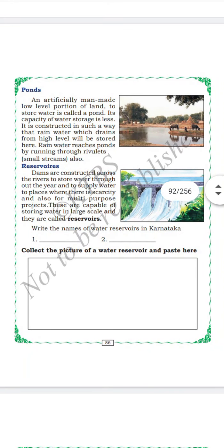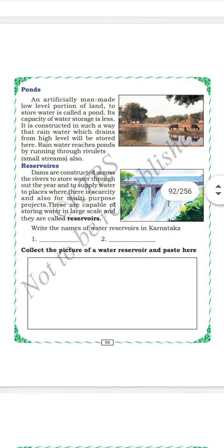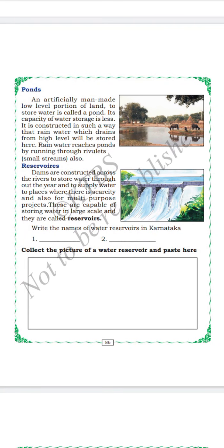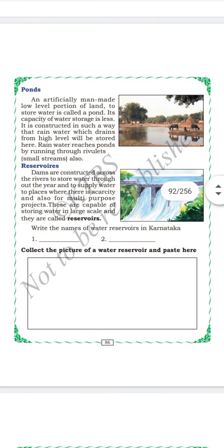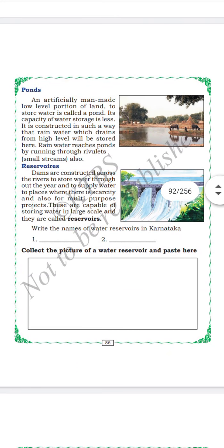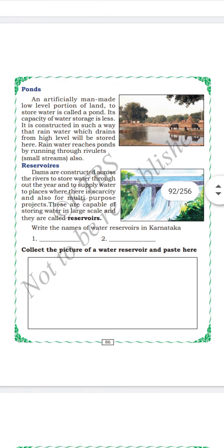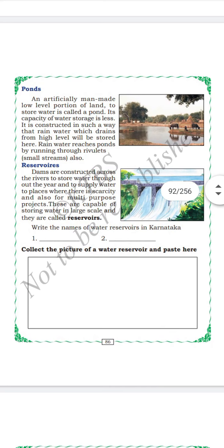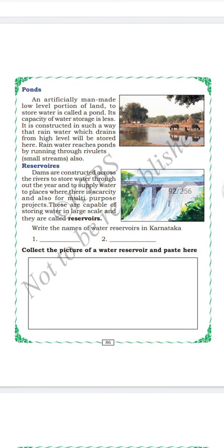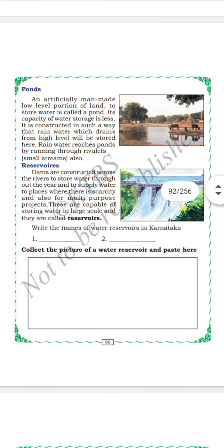By storing water in dams, we also supply water to the places where there is scarcity. Dams are also used for multi-purpose projects like power generation and agriculture. Even some dam water is used to supply drinking water. It has many uses and is very useful.